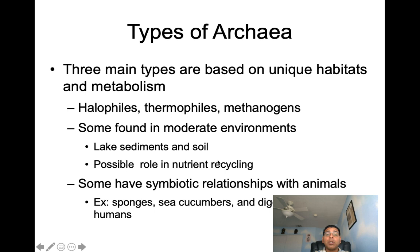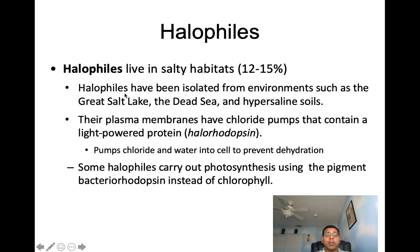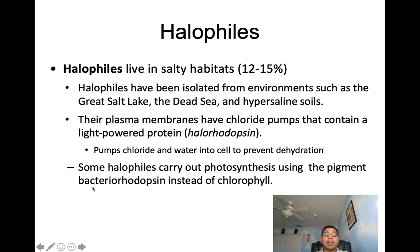Some archaea have a symbiotic relationship with animals, such as sponges, sea cucumbers, and also in the digestive tract of humans. Halophiles are known as our salt lovers — they live in salty habitats such as the Great Salt Lake, the Dead Sea, and hypersaline soils. Their plasma membranes have chloride pumps containing a light-powered protein called halorhodopsin, which pumps chloride and water into the cell to prevent dehydration. Some halophiles carry out photosynthesis using the pigment bacteriorhodopsin instead of chlorophyll.